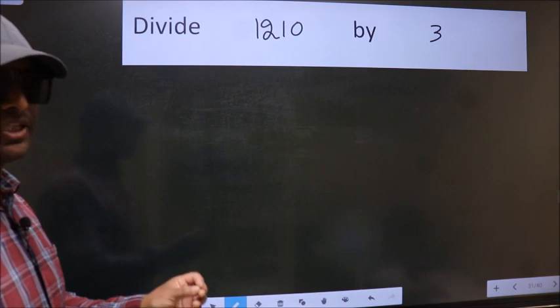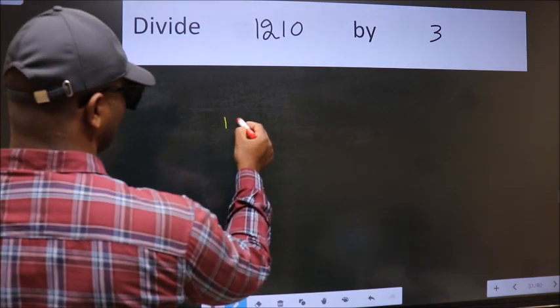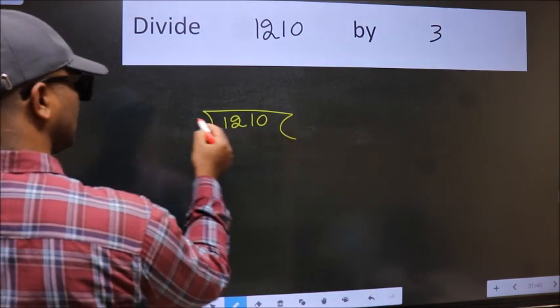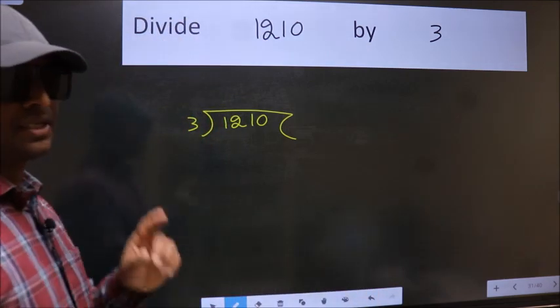To do this division, we should frame it in this way. 1,210 here, 3 here. This is your step 1.